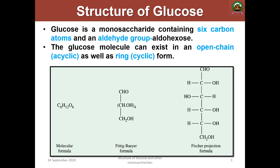Glucose is a monosaccharide consisting of six carbon atoms and an aldehyde group, hence it is known as an aldohexose — the word 'aldo' from the aldehyde group and 'hexose' from six carbons. Glucose can exist in an open chain form, known as the acyclic form, and a ring form or cyclic form. The molecular formula is C6H12O6 and it can be represented by the fitting Baeyer's formula and the Fischer projection formula, which is the well-accepted notation for the structure of glucose.